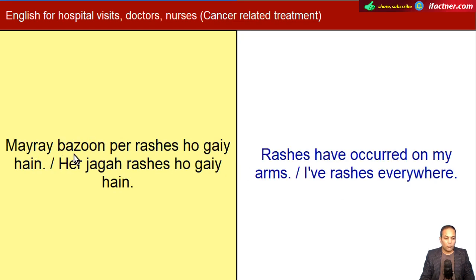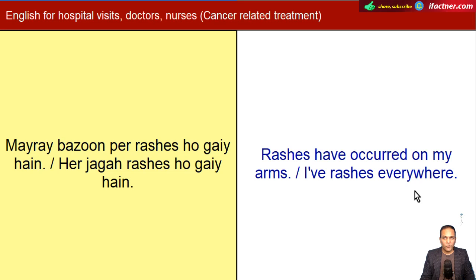Mere bazuon per rashes ho gaye hain, ya phir har jagah rashes ho gaye hain. Rashes have occurred on my arms. I have rashes everywhere.